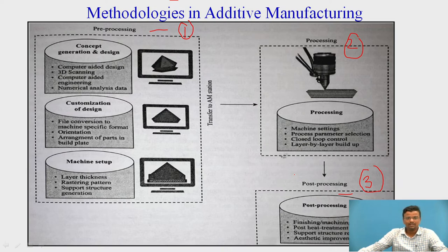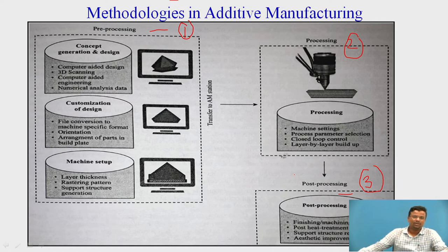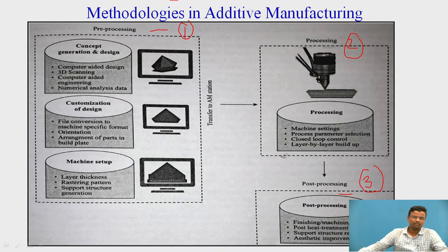We have to validate and optimize the design before providing the CAD model to the machine tool. We can use computer-aided engineering or finite element analysis to validate the data. After that we customize the design — we must provide the CAD model in a specific file format. For example, a model developed in CATIA as a .CAD part file cannot be directly provided to the additive manufacturing machine tool. The standard format used is .STL, which stands for Standard Tessellation Language. We then arrange the parts with respect to the build plate, set the machine parameters such as layer thickness, raster pattern, and the support structure to be generated.